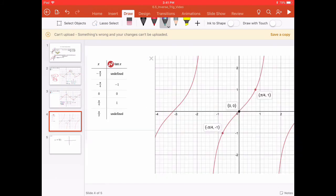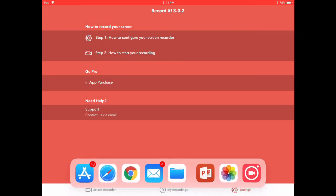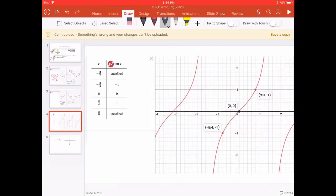For tangent, it's going to be a little bit more unique. We will once again restrict from negative π over 2 to π over 2, but this time note that those endpoints, negative π over 2 and π over 2, will not be included. And that's because tangent is undefined at those points. Recall, tangent is y divided by x, and if the denominator is 0, it'll be indeterminate.